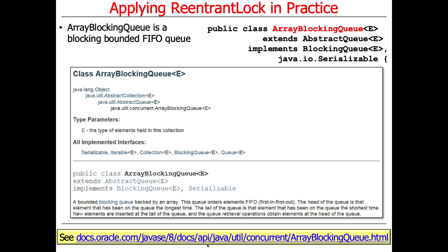ArrayBlockingQueue is a blocking bounded FIFO queue. Blocking means if the queue is empty, the calling thread trying to take an item will block. If the queue is full, a call trying to put an item in the queue will block. Bounded means you can only have n items in the queue, and FIFO means first in, first out.